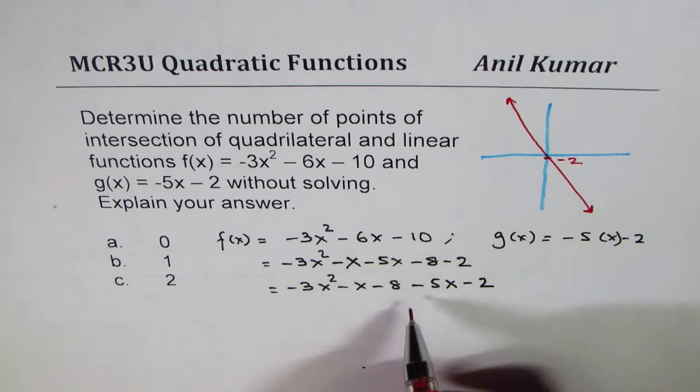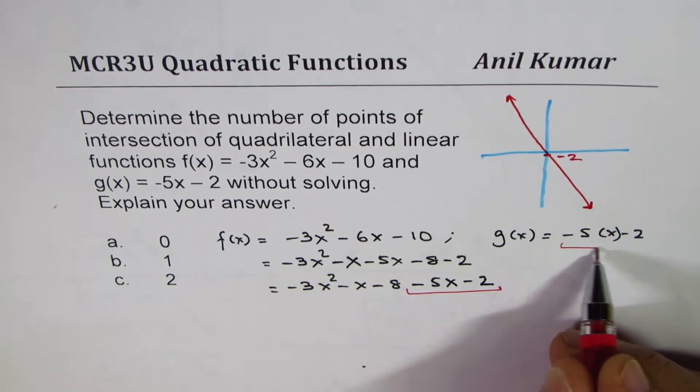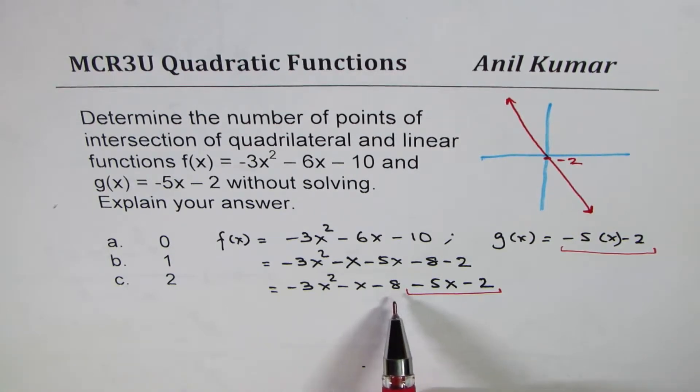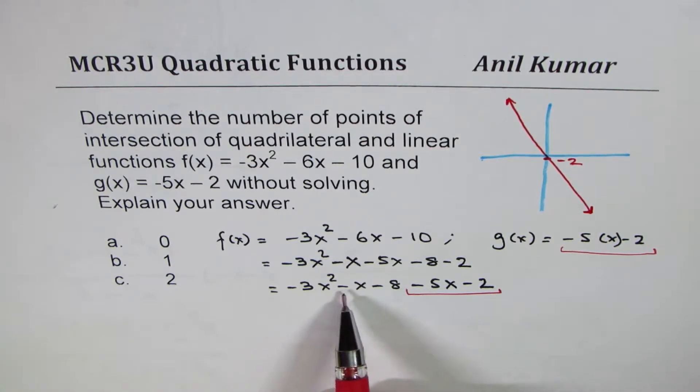That is your g(x). Now what do you observe here is all these terms are negative, right? So for any value of x, -3x² is going to be more negative than -x, right?